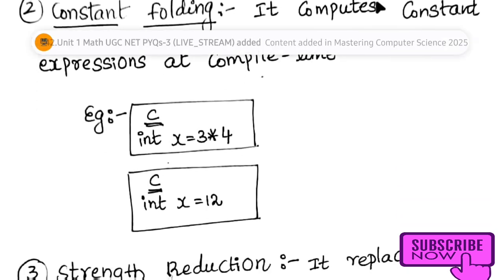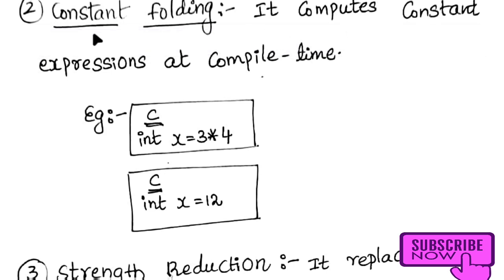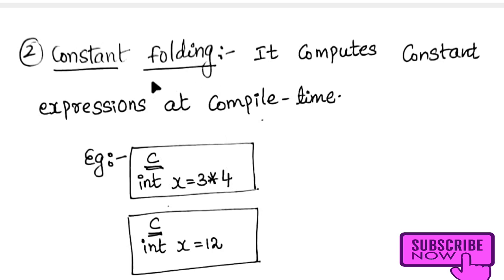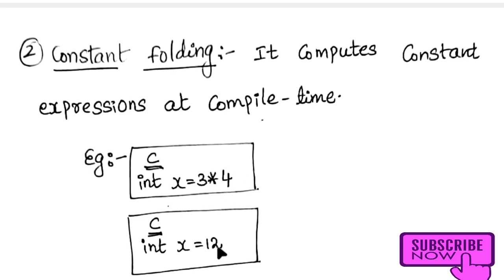The second type is constant folding. Constant folding computes constant expressions at compile time — this is a very important point. For example, instead of writing int x = 3 * 4 and evaluating it at runtime, we can directly write int x = 12 at compile time. This is constant folding.